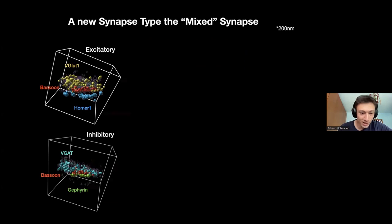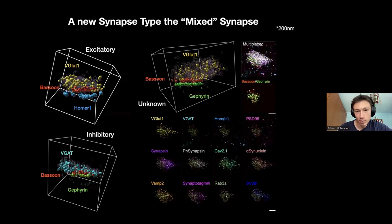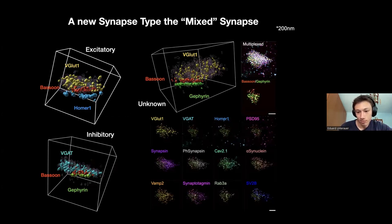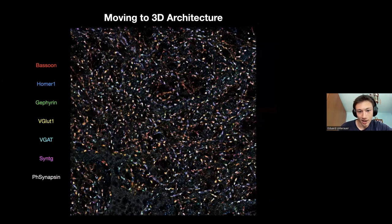We therefore propose that on top of standard excitatory and inhibitory synapses, there is a new kind — this mixed or unknown type — in which VGluT1 and Gephyrin overlap.